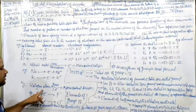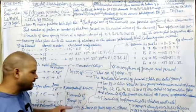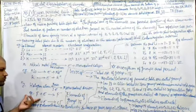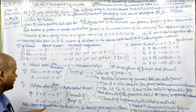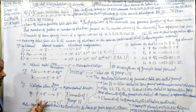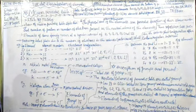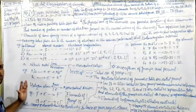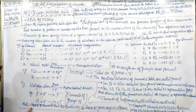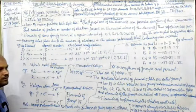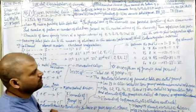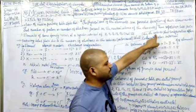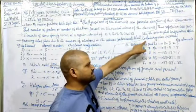Halogens, when they gain one electron, form monovalent anions. For example, chlorine belongs to the halogen group. When one electron is gained by chlorine, it forms a chloride ion. These elements belong to group 7A. Group 8A elements don't have tendency to lose or gain electrons. Thus, repetition takes place due to valence shell electrons and valence shell configuration after certain regular intervals.